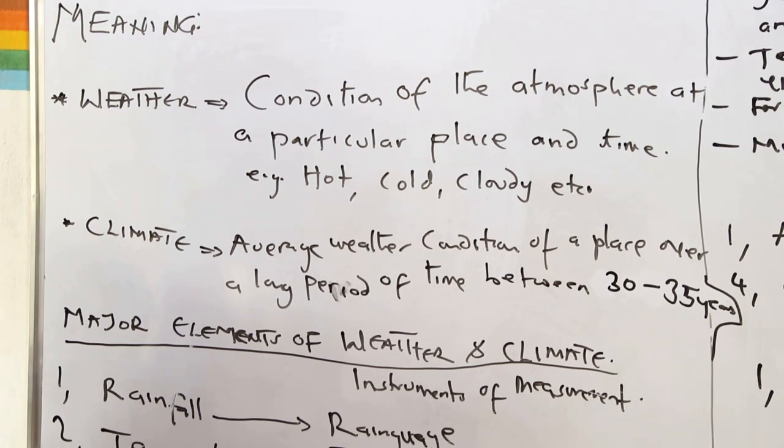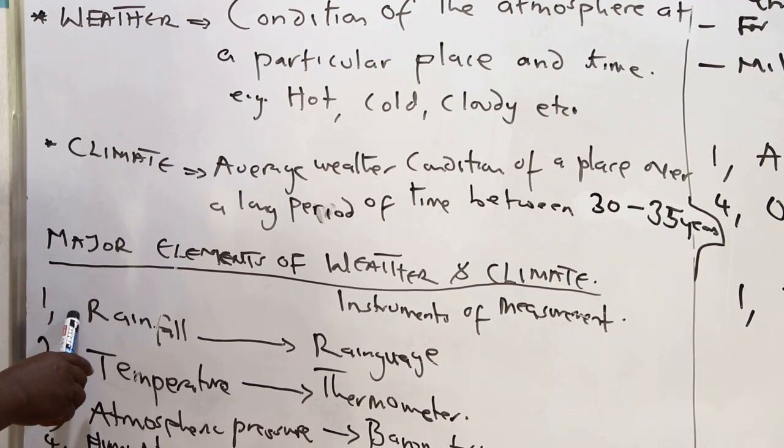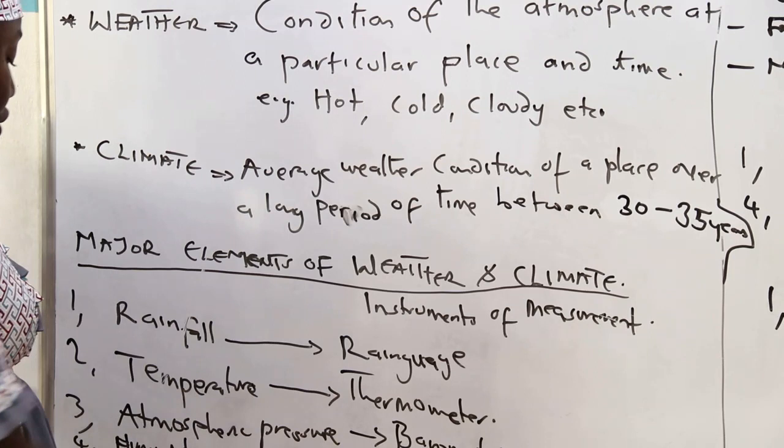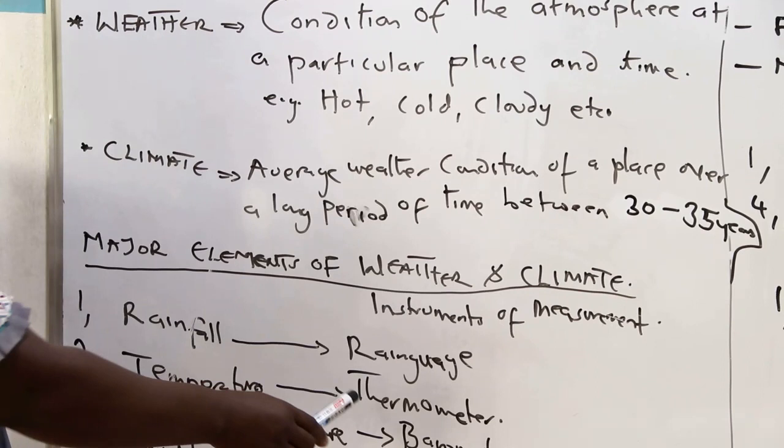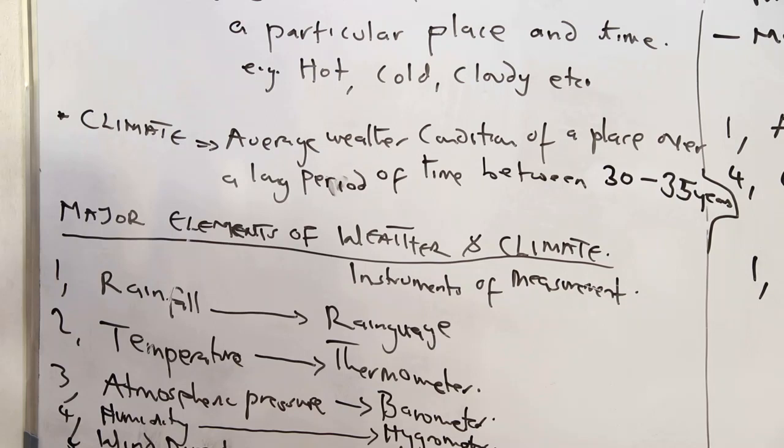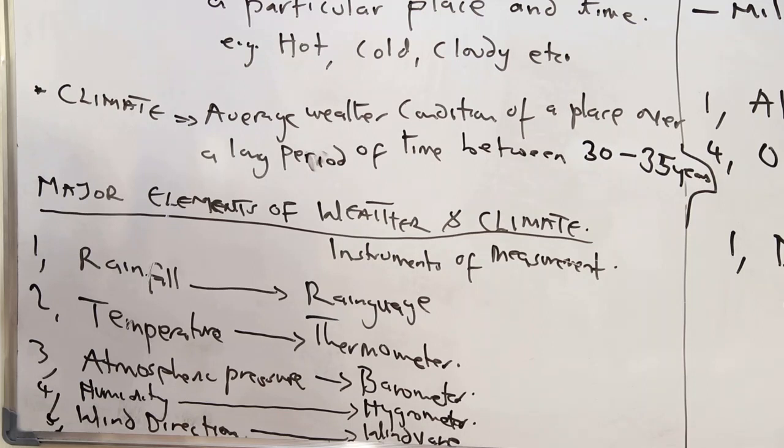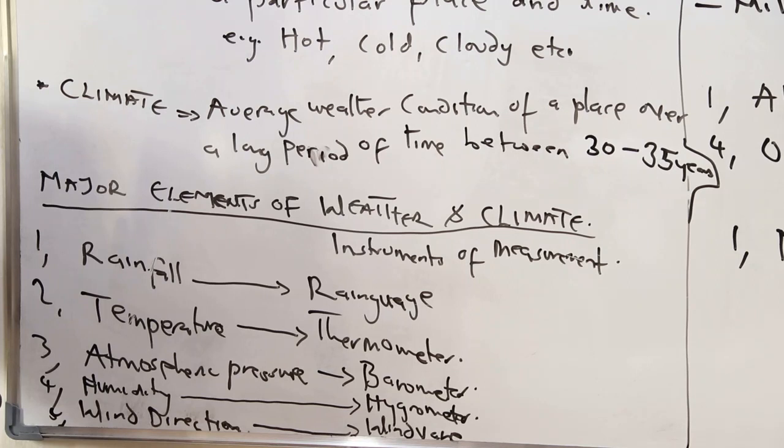Now what are the elements of weather and climate? The elements include: first, we have rainfall, and rainfall can be measured by using a rain gauge. Secondly, we have temperature, which can be determined with a thermometer. The third one is atmospheric pressure, which can be measured with a barometer. The fourth one is humidity, which can be determined by the use of a thermometer.